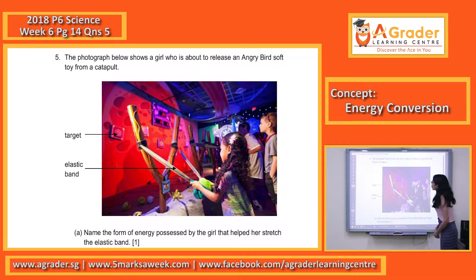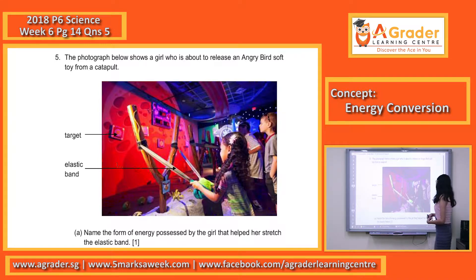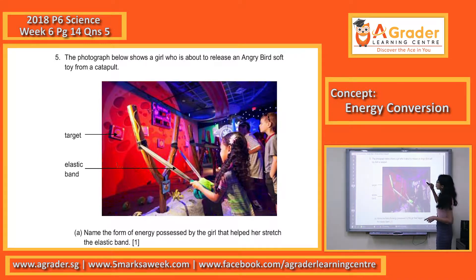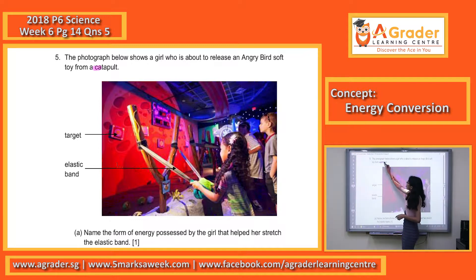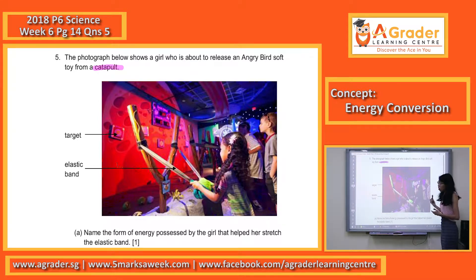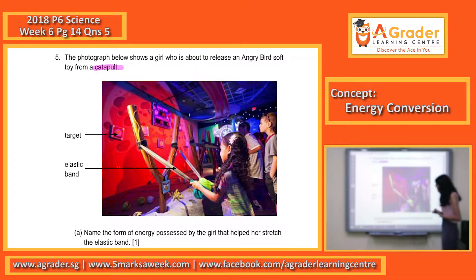Now let's look at question 5. The photograph below shows a girl who was about to release an angry bird soft toy from a catapult. They are asking you to name other forms of energy that are possessed by the girl.